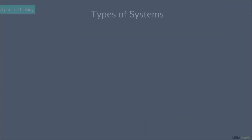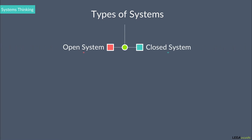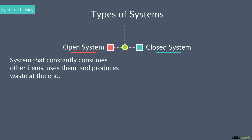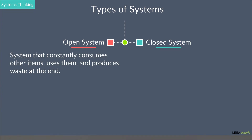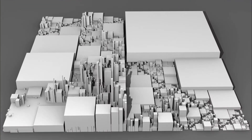There are two types of systems. The first type is open systems, which are systems that constantly consume other items, use them, and produce waste at the end. A whole city may be an example of this, as it imports food, energy, and products.